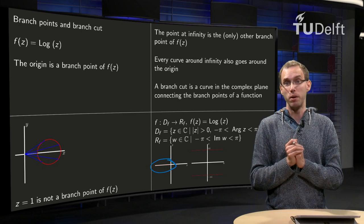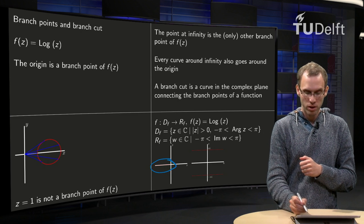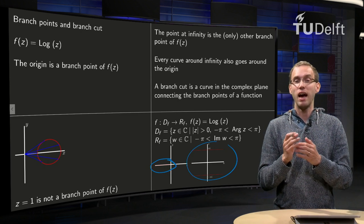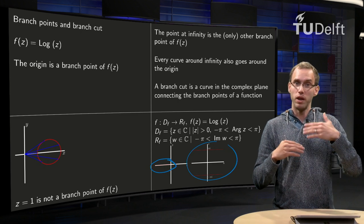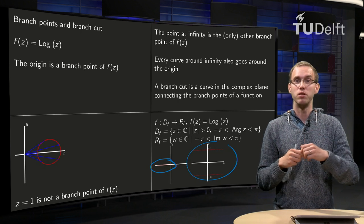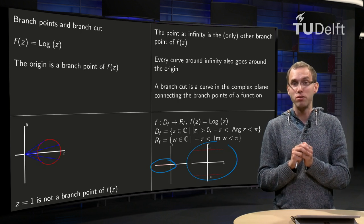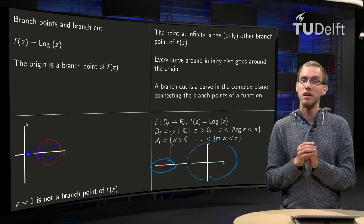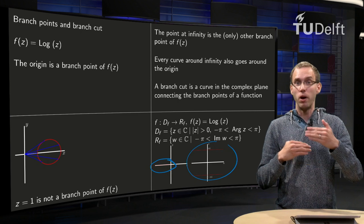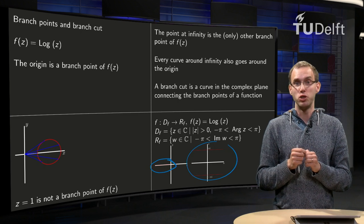So what will then be our range, so what can we get in the codomain that's drawn over here, we can get anywhere as long as the imaginary part, which will be the argument, is between minus pi and pi, the real part will be the ln of the norm, so the real part can be anything, the ln of the norm of z, and the imaginary part will have to stay between minus pi and pi.